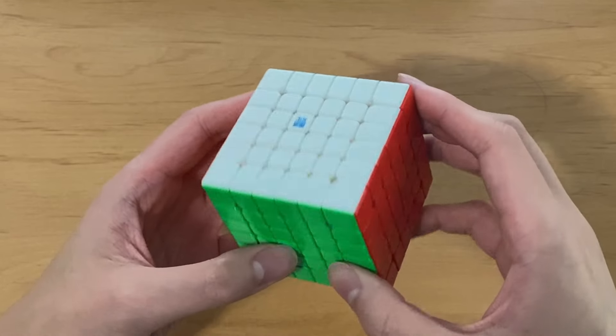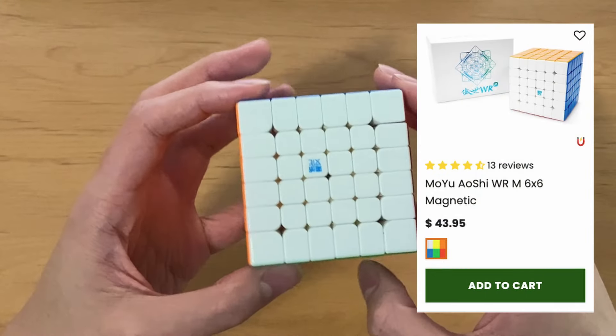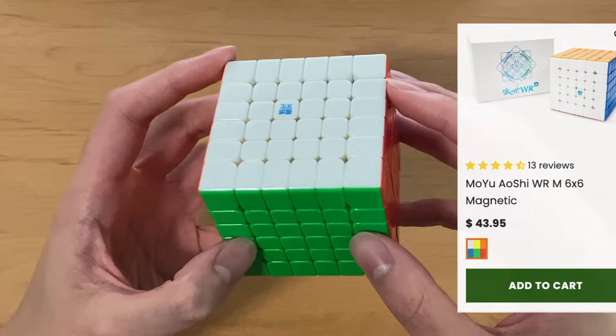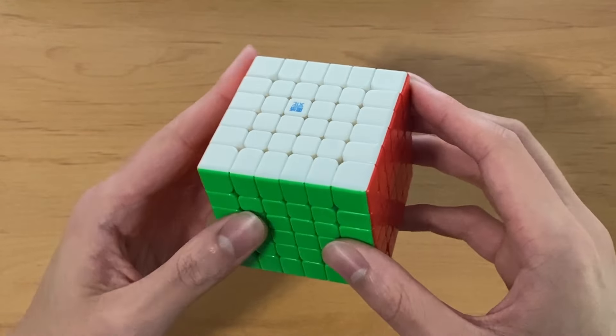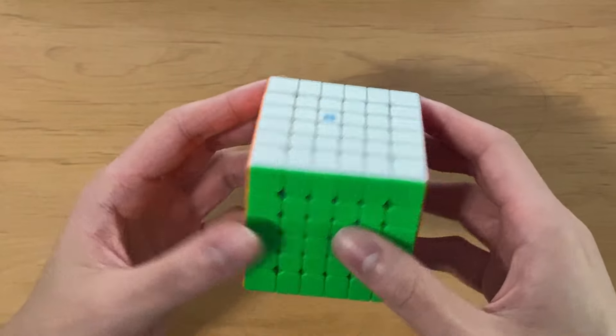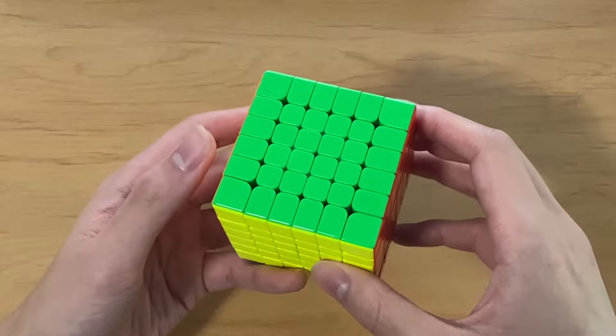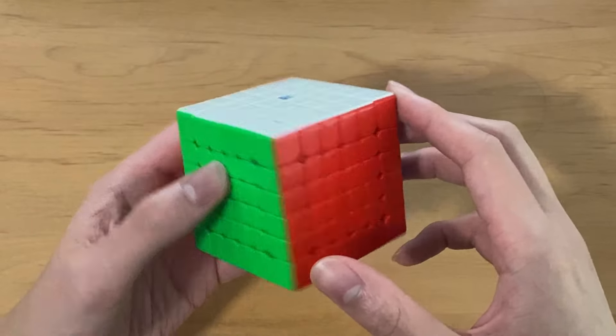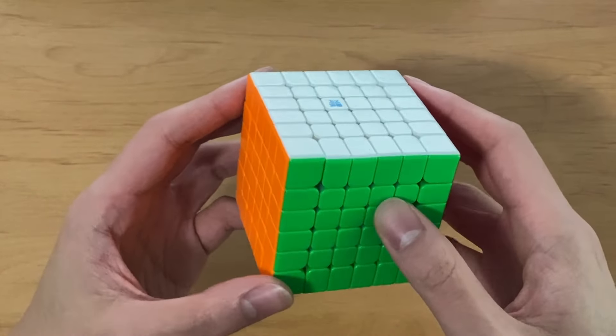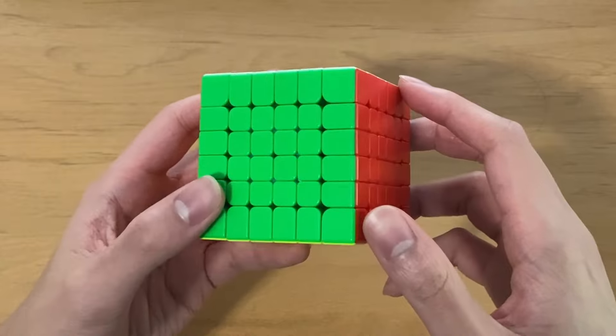For 6x6, I use the Moyu Aoshi WRM. This is by far the best 6x6 on the market, and there's really no other cubes that come close to it. Pretty much everyone uses this cube, and for good reason. The performance is great, it's honestly very enjoyable to solve on, and you can't really get any other cube that turns as well as this one does.